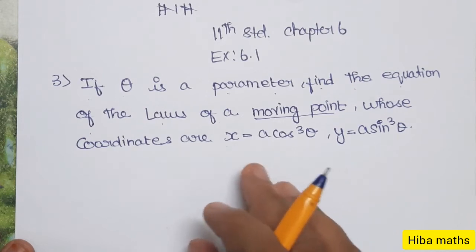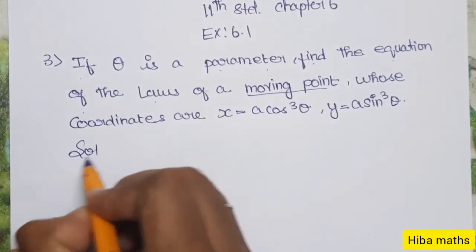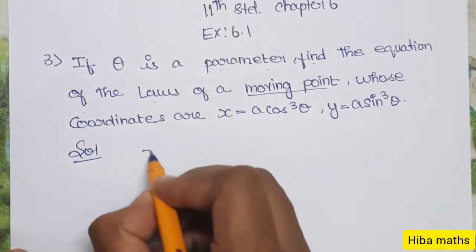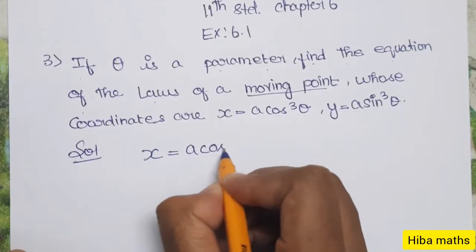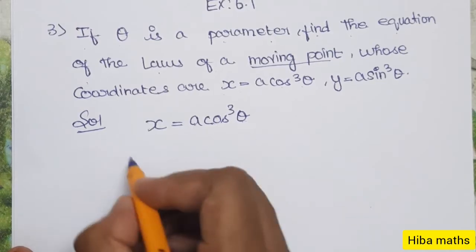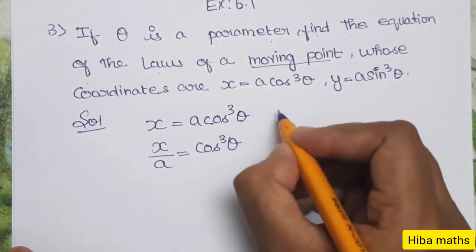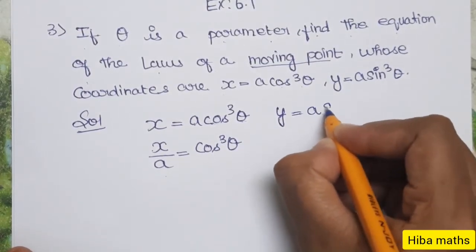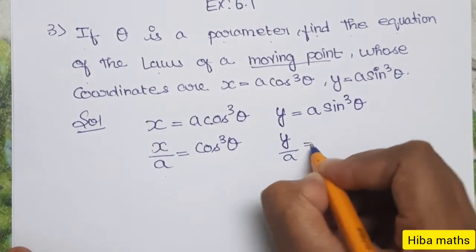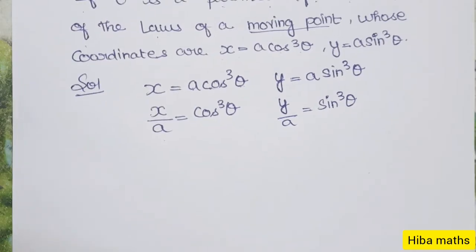In the solution, we work with the x and y values. From x = a·cos³θ, we get x/a = cos³θ. From y = a·sin³θ, we get y/a = sin³θ. Now we need to eliminate cos³θ and sin³θ.